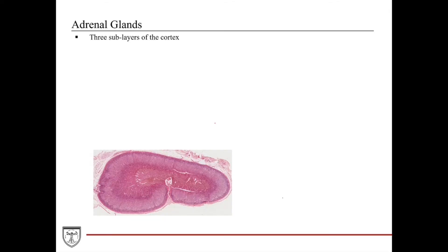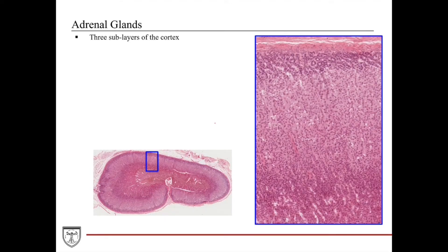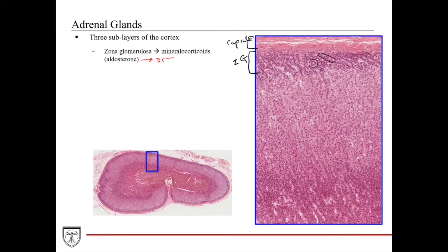Looking at the three sub-layers of the cortex from outside to inside: just under the capsule, we have the zona glomerulosa — small endocrine cells organized into spherical or ovoid groupings. This layer produces and secretes mineralocorticoids, the most prominent example being aldosterone. Aldosterone's target organ is the kidney's distal convoluted tubules. In response to aldosterone, the distal convoluted tubules increase sodium resorption back into the body, with water following, thereby retaining water and increasing blood pressure and volume.